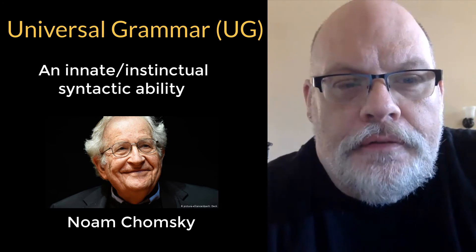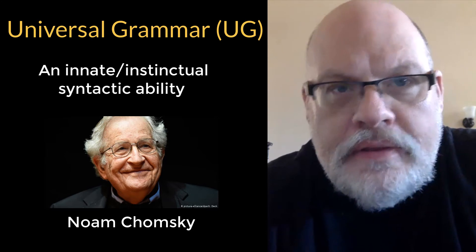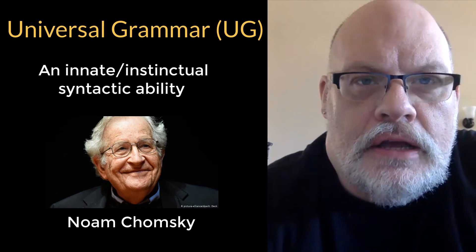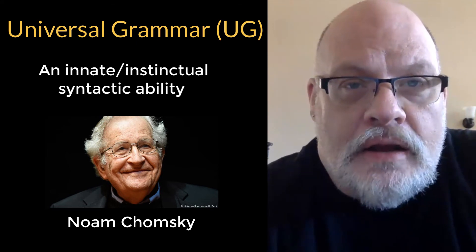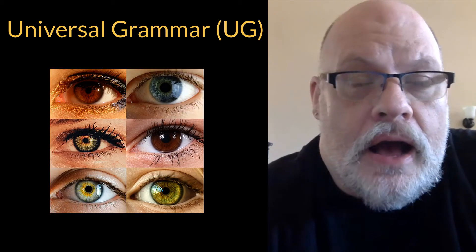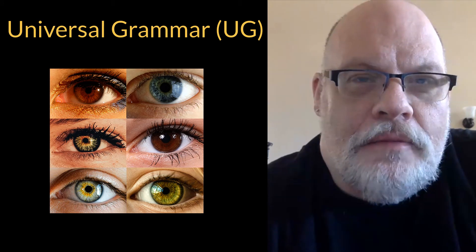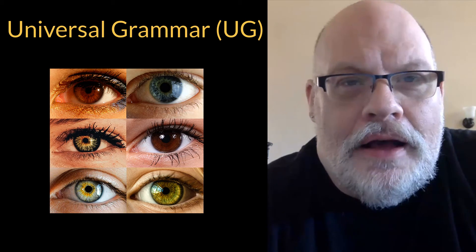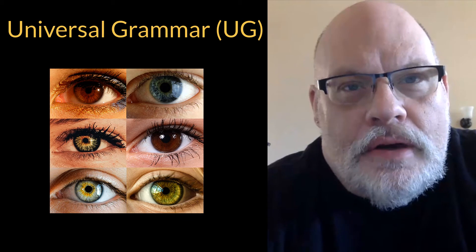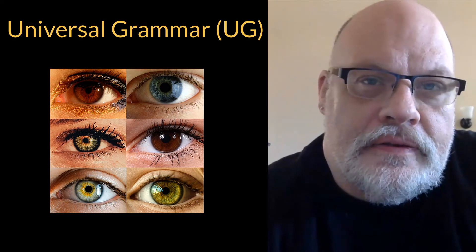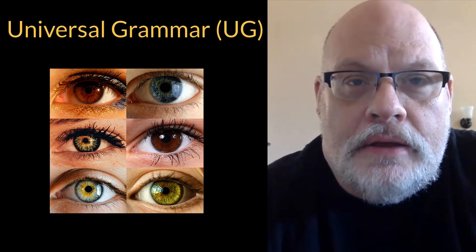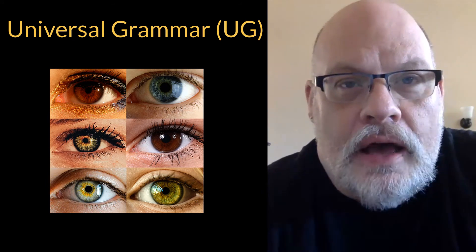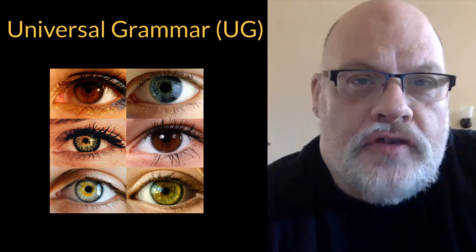You might be asking yourself: how is it possible that language would be an instinct and yet we all speak different languages? French seems very different from English; Swahili seems very different from French. How could we have different languages if we're born with some innate knowledge of grammar? But think for a moment about other things that are innate parts of us — take, for example, eyes. Eyes come in all sorts of different colors, different shapes, and with different abilities. So it follows that we can have variation within a system that is built into us.